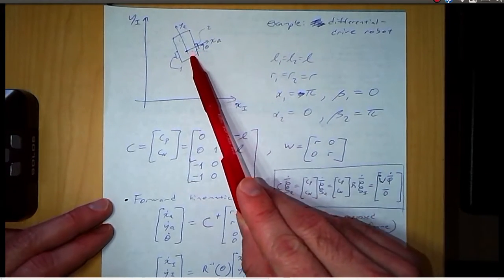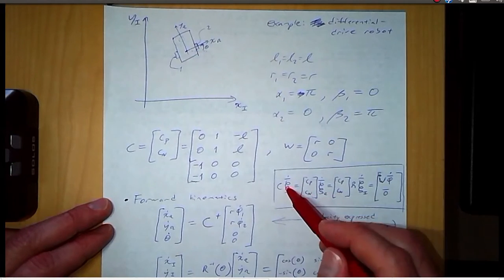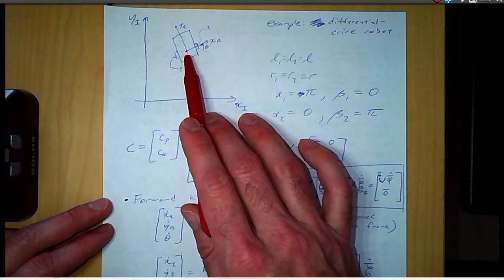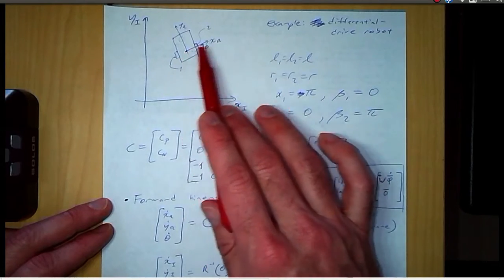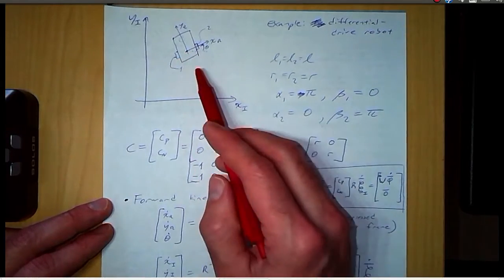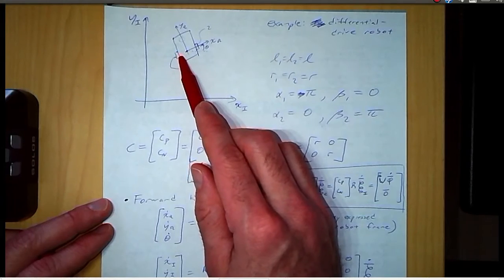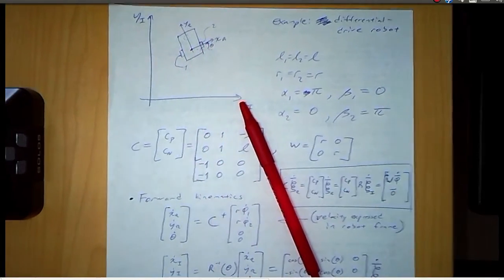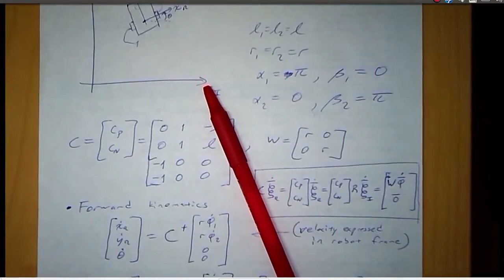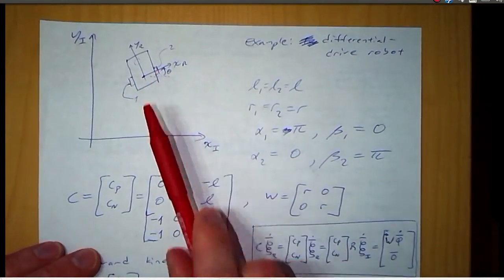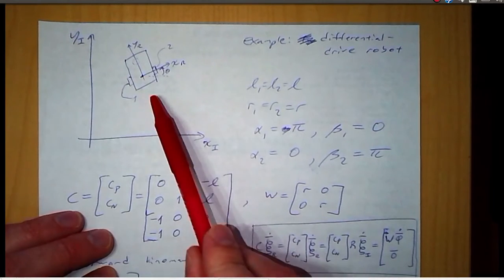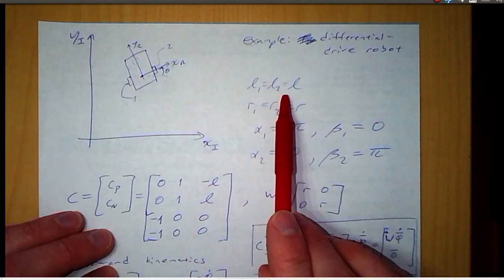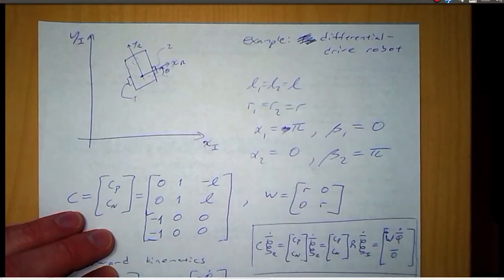The coefficients of the constraint equations come from the parameters locating the wheels in the robot frame. Wheel one is on the negative x-axis and wheel two is on the positive x-axis. Each one is the same distance from the origin and each one has the same radius, so L1 equals L2 and R1 equals R2.